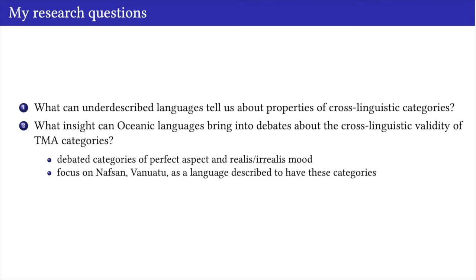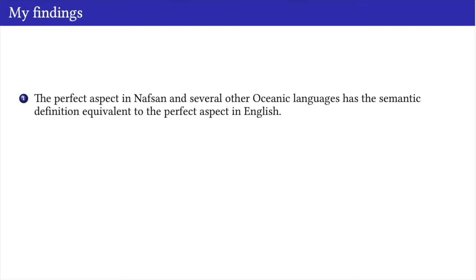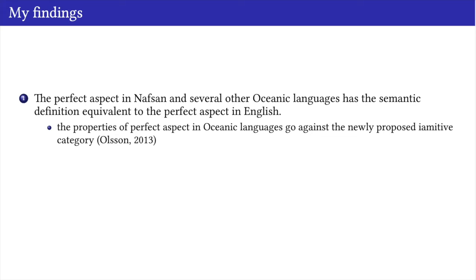I will talk about this in more detail in the rest of my talk. The findings are that the perfect aspect in Nafsan and several other oceanic languages actually has a semantic definition equivalent to perfect aspect in English, and it is not related to newly proposed categories of the region. In particular, I'm talking about the category of yamitives proposed by Olson for several Austronesian languages as a new kind of perfect. I will show that in the oceanic context we find evidence against proposing this new category.